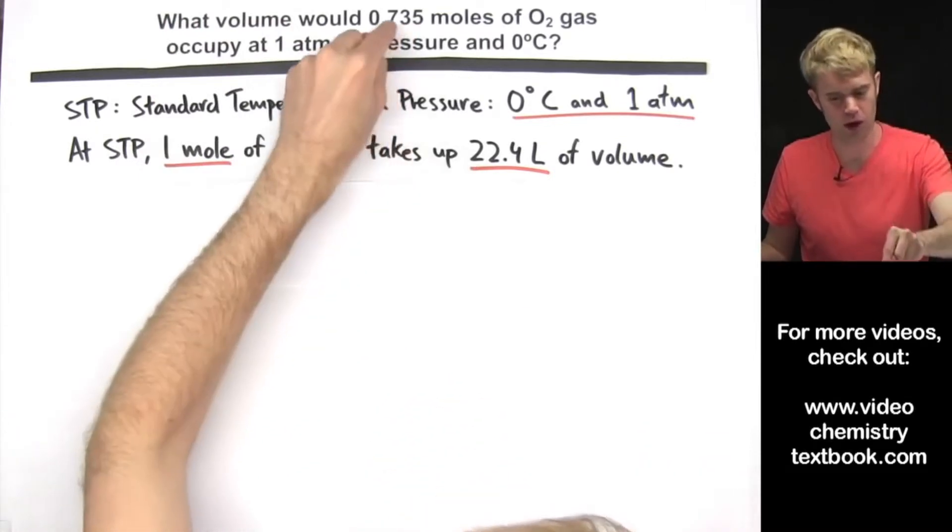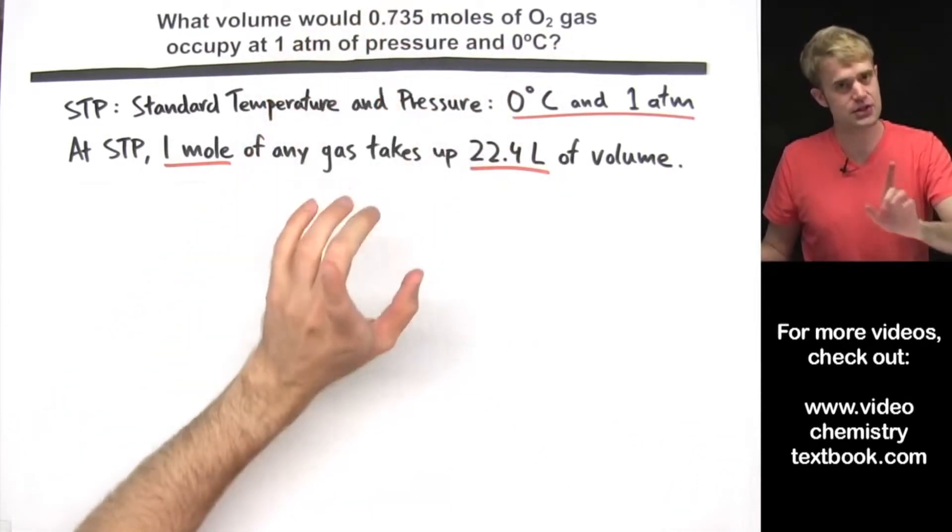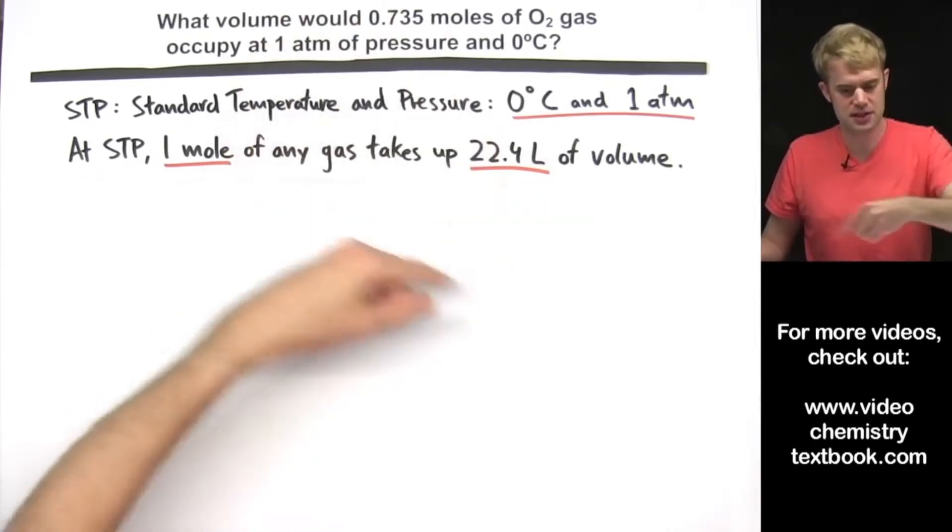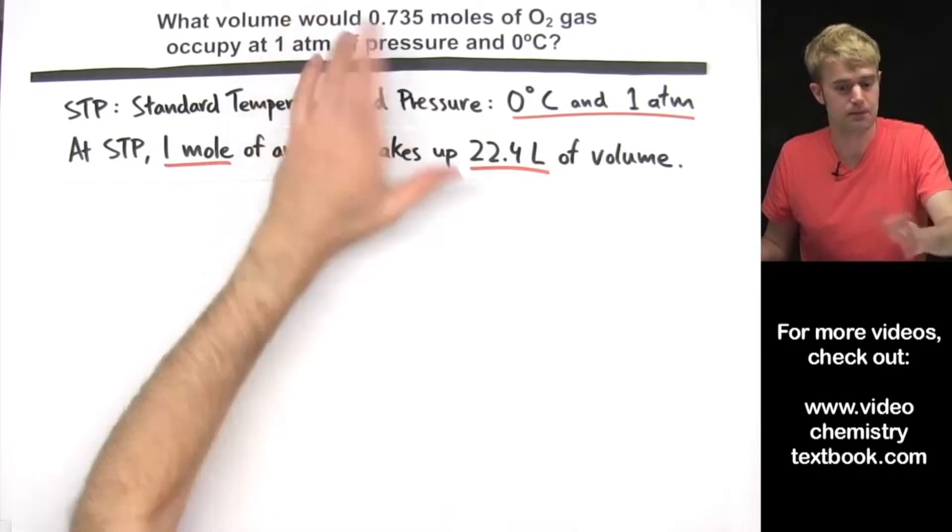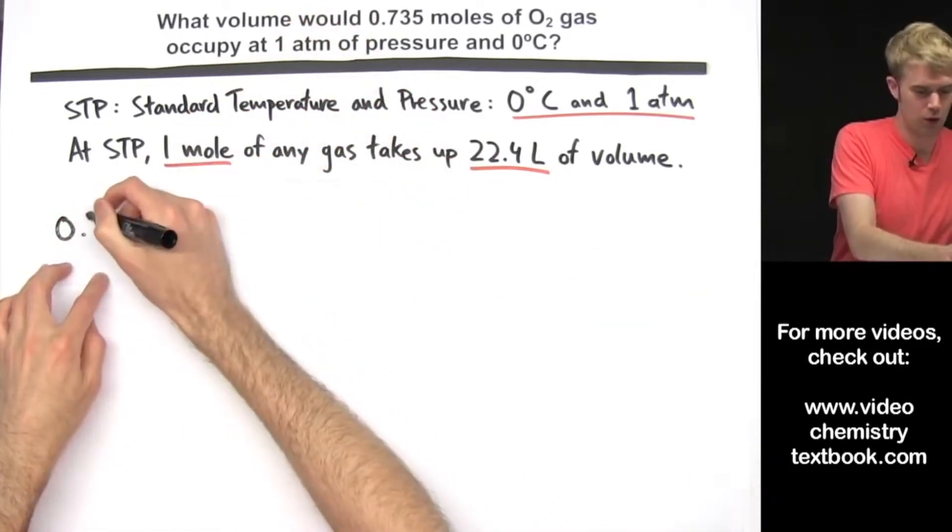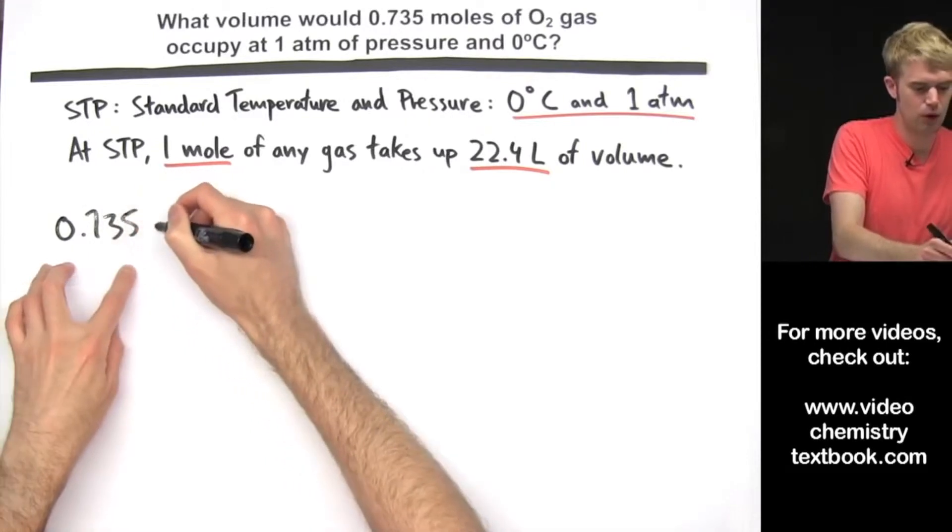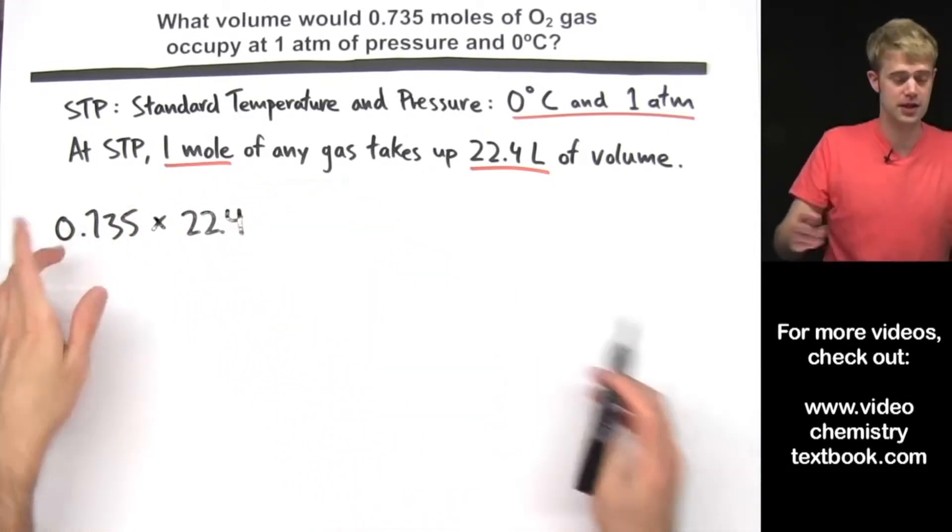So if we had 1 mole of O2 gas, it would take up 22.4 liters. We have less than 1 mole so this amount of gas is going to be taking up less than 22.4 liters. But still, to find out how much space this would take up, we are going to want to take this amount of moles and multiply it by the amount of space that one mole would take up at STP.